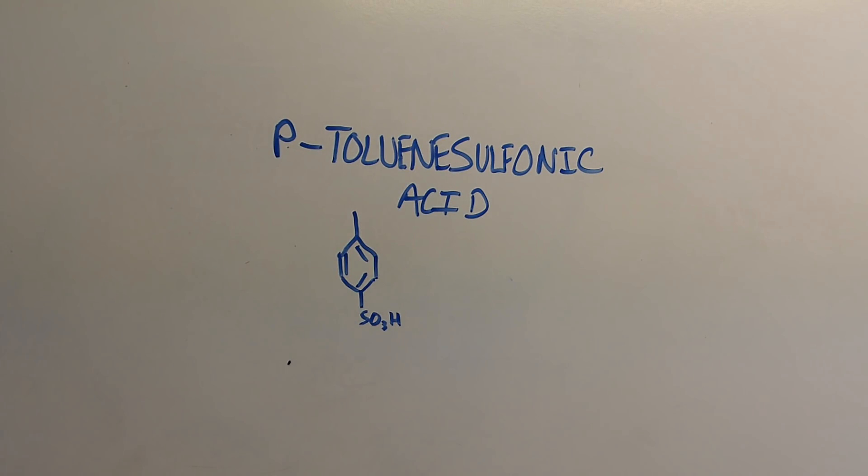Hi everyone and welcome back. Today I'll be making a compound called tosylic acid or para-toluene sulfonic acid using toluene and sulfuric acid.